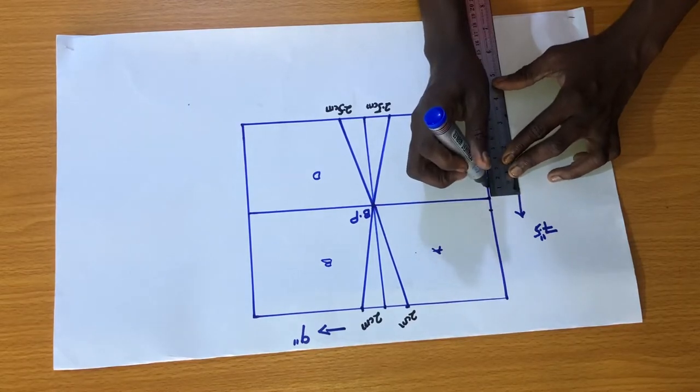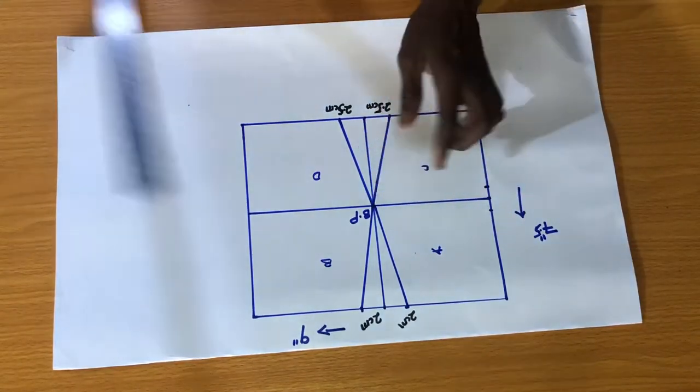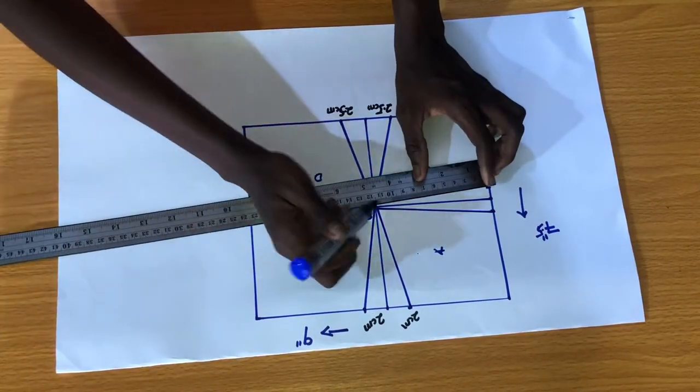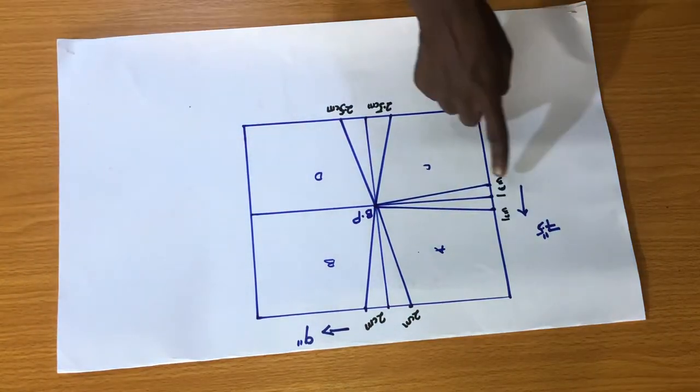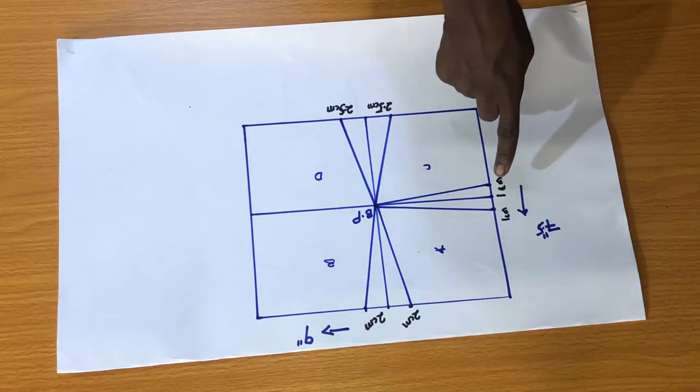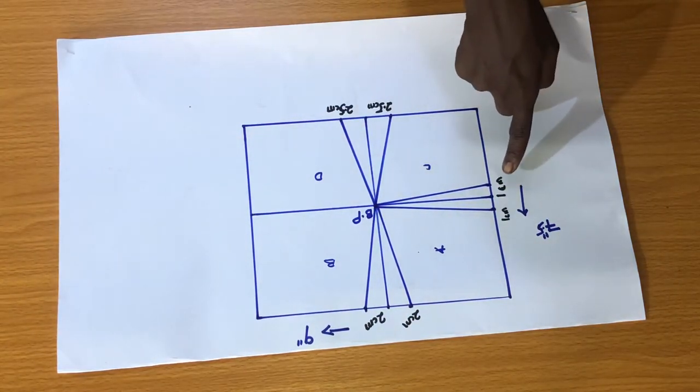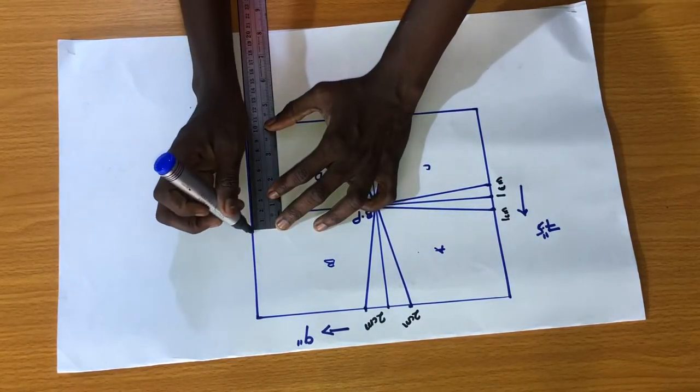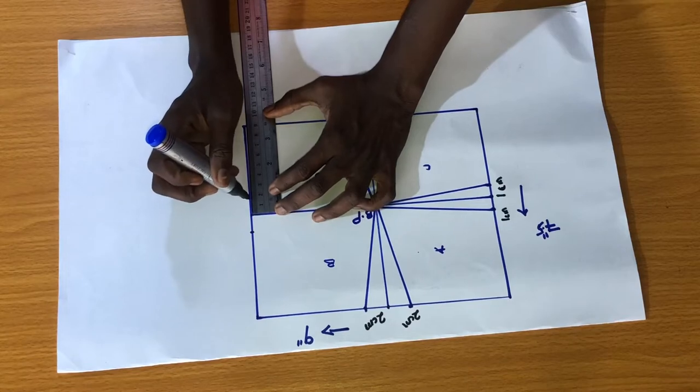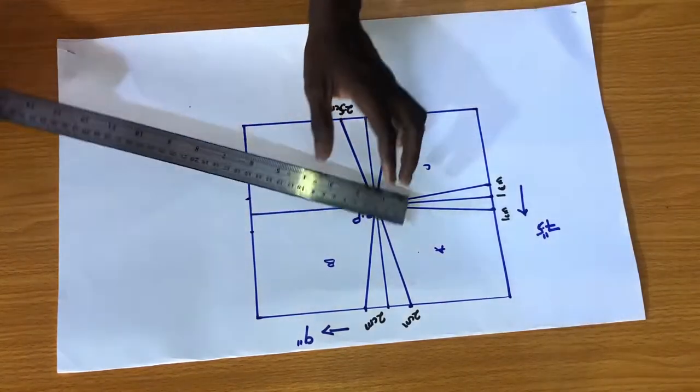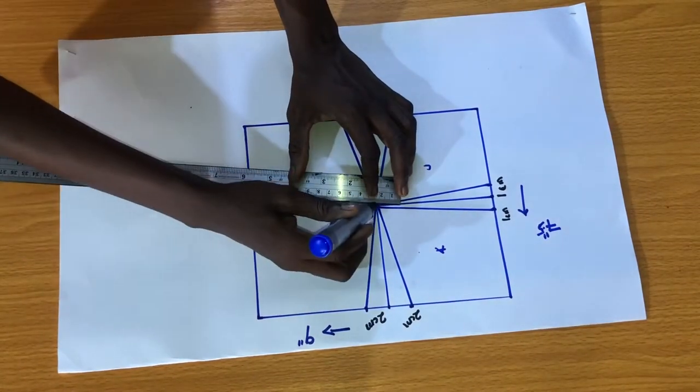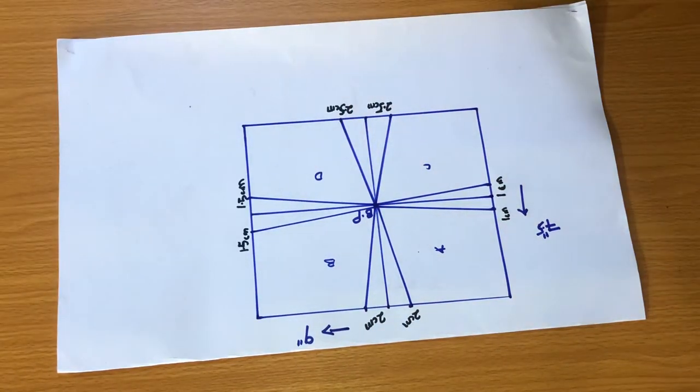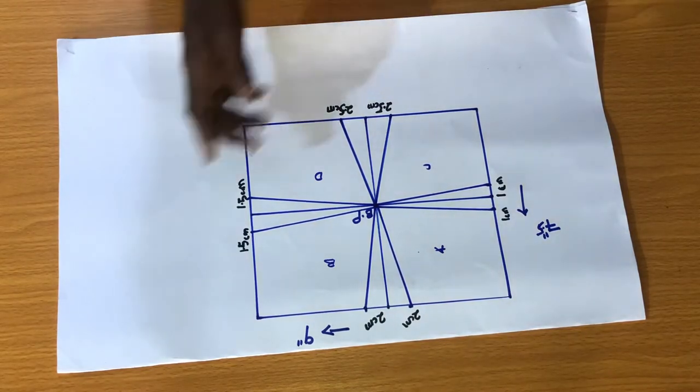Since I have one centimeter here, I'll add 0.5 to it and that'll be 1.5 centimeters which I'll mark on the line between b and d. Take note that these measurements with the black marker are the standard measurements used for all bra cup sizes.